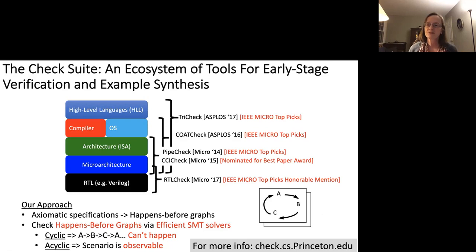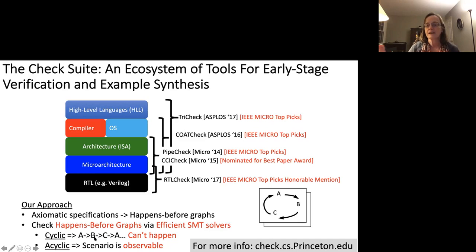The key is: if there's a case that is observable and yet the specification says it should never be observable, we've created a tool that automatically finds bugs. We can bring those examples to designers and say, 'You didn't want this to ever happen, but our cycle analysis shows it could happen.' Then we can come up with design changes to prevent it.